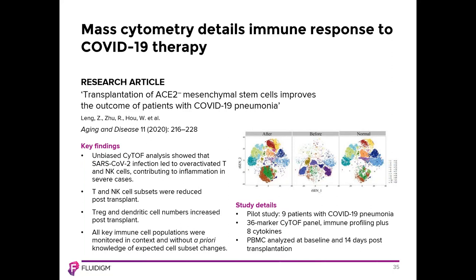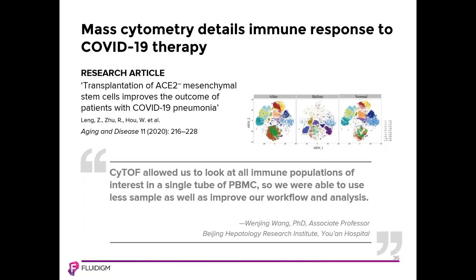A recent study of COVID-19 patients undergoing treatment for inflammation caused by the virus shows the power of mass cytometry to visualize both phenotypic and functional changes across the immune system as a whole over time. This enabled a systems-level analysis that showed overreaction of T and NK cell subsets that likely contributed to inflammation in severe cases. The researchers did not have to guess at which population to focus on before beginning their study. As one of the researchers noted, CyTOF allowed them to look at all immune populations of interest in a single tube of PBMC, using less sample while improving workflow and analysis.